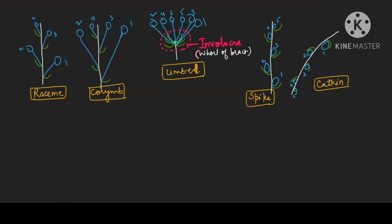With respect to whether flowers are unisexual or bisexual: all the first three diagrams — raceme, corymb, and umbel — have bisexual flowers with pedicellate condition. Spike is also bisexual but with sessile flowers, meaning pedicels are absent. Catkin is only unisexual, and it is especially a female flower.